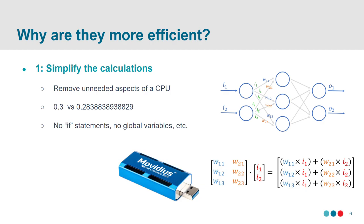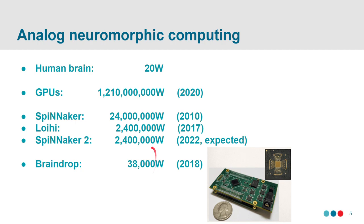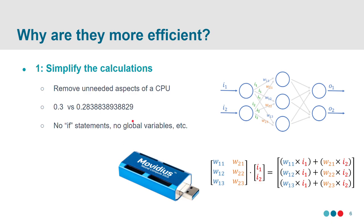What's going on with these chips that drop power requirements for neural networks? A lot of them start by getting rid of unneeded aspects. If we're running a system to compute neural networks, let's just pare everything down to what's needed. With most neural networks, you don't need huge precision numbers — 0.3 is fine, and that turns out to be a huge power saving. You don't need if statements, global variables, or other things in a traditional computer. All you really need is something to do nonlinearities and something to do matrix multiplies.